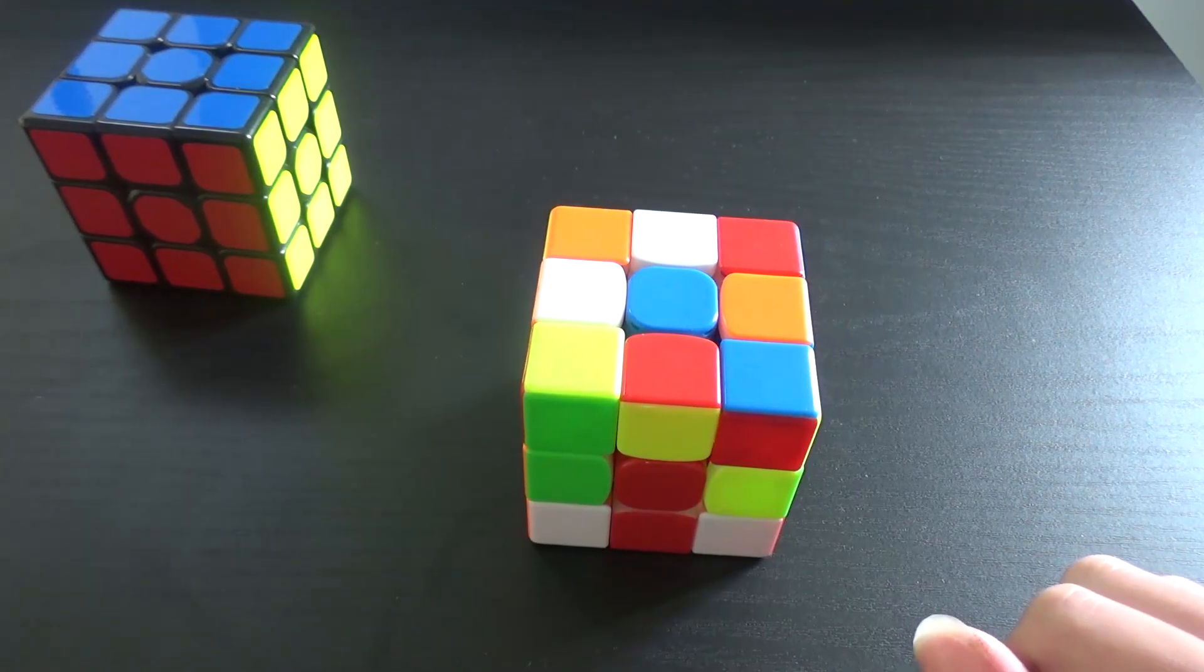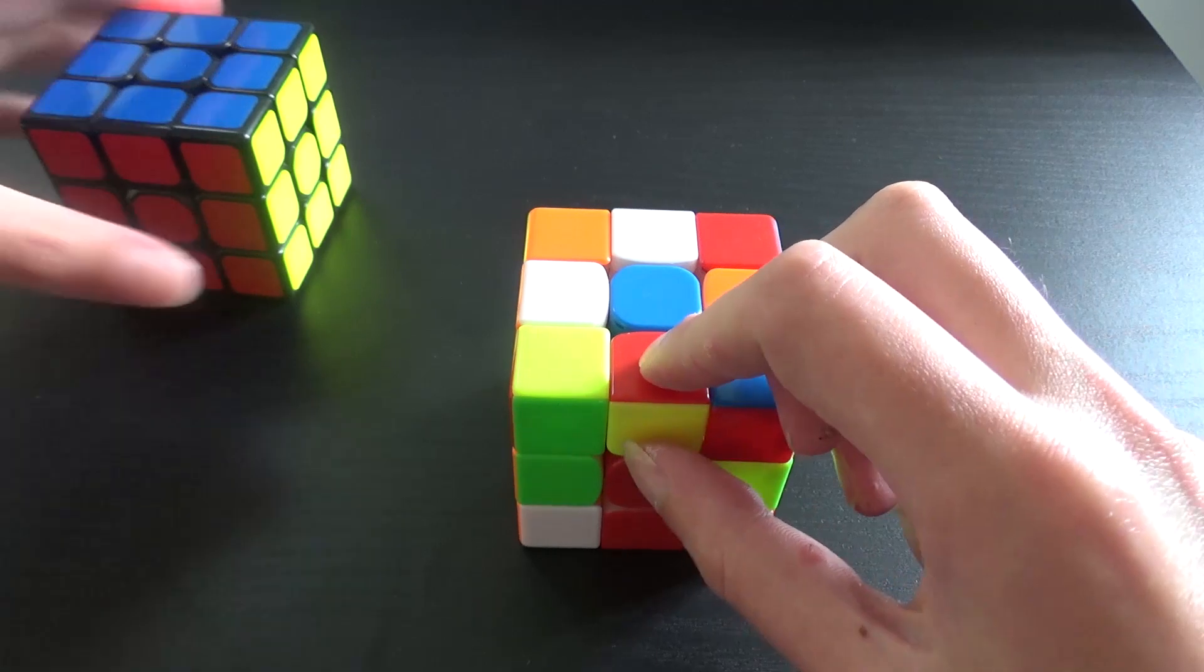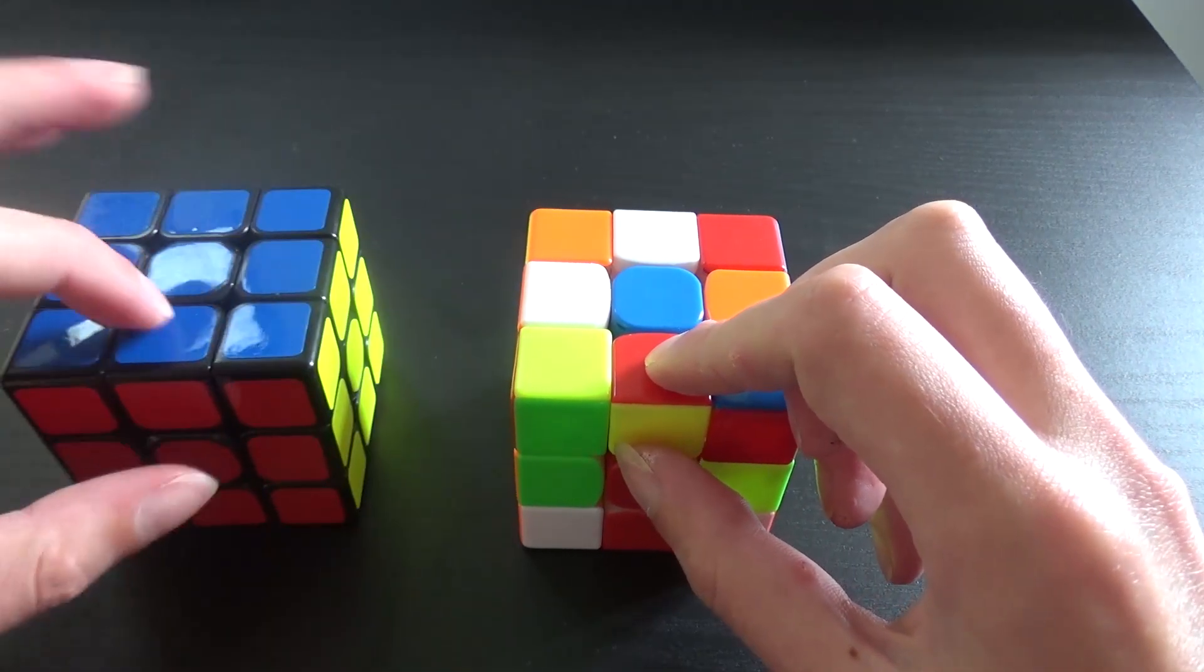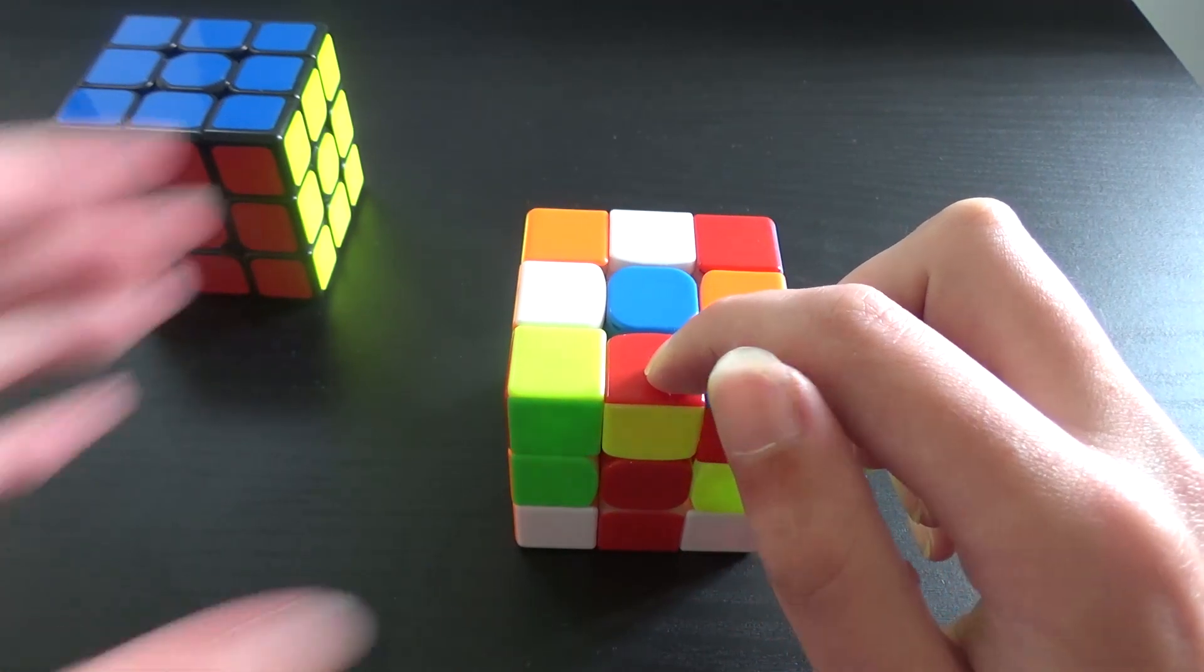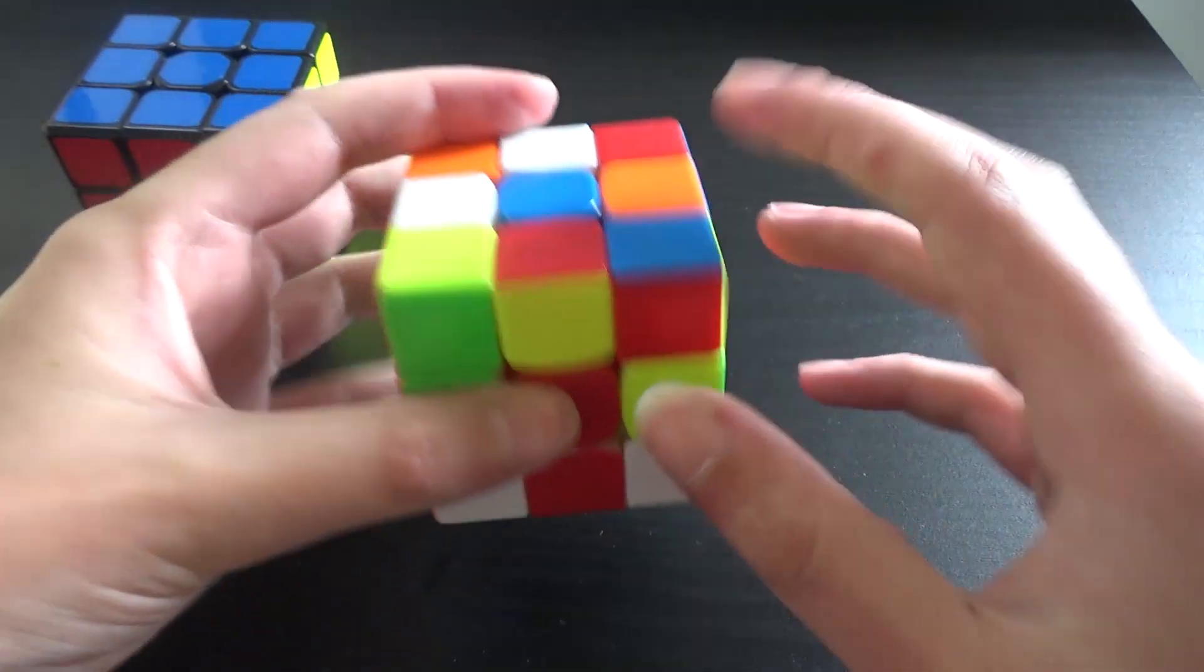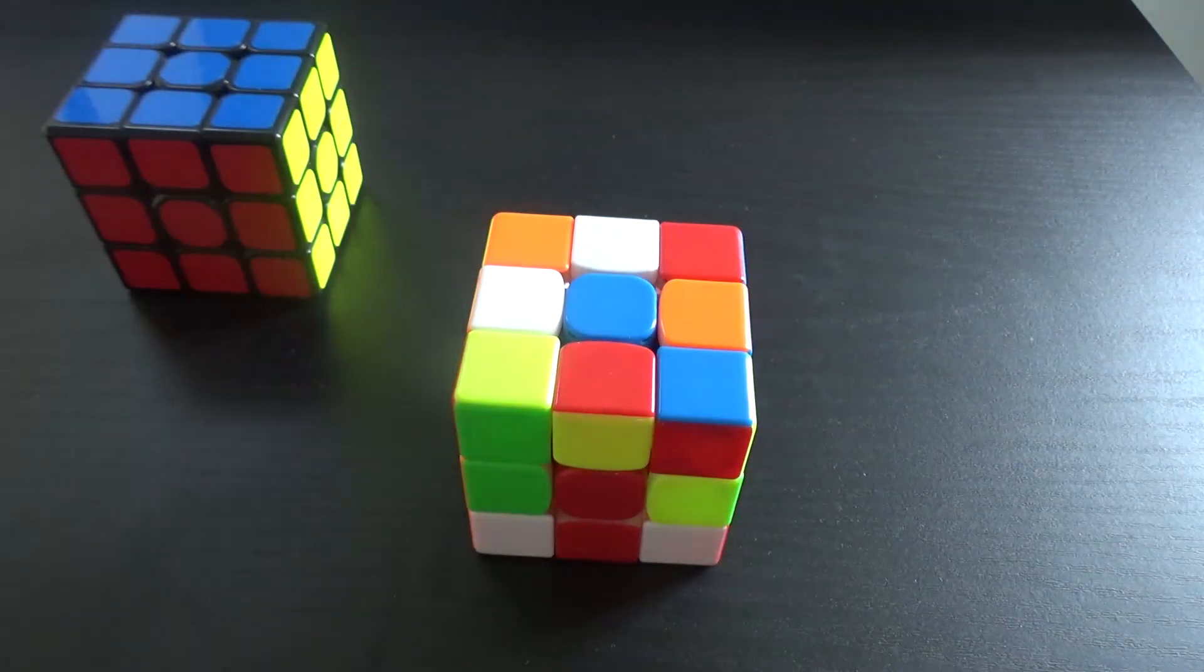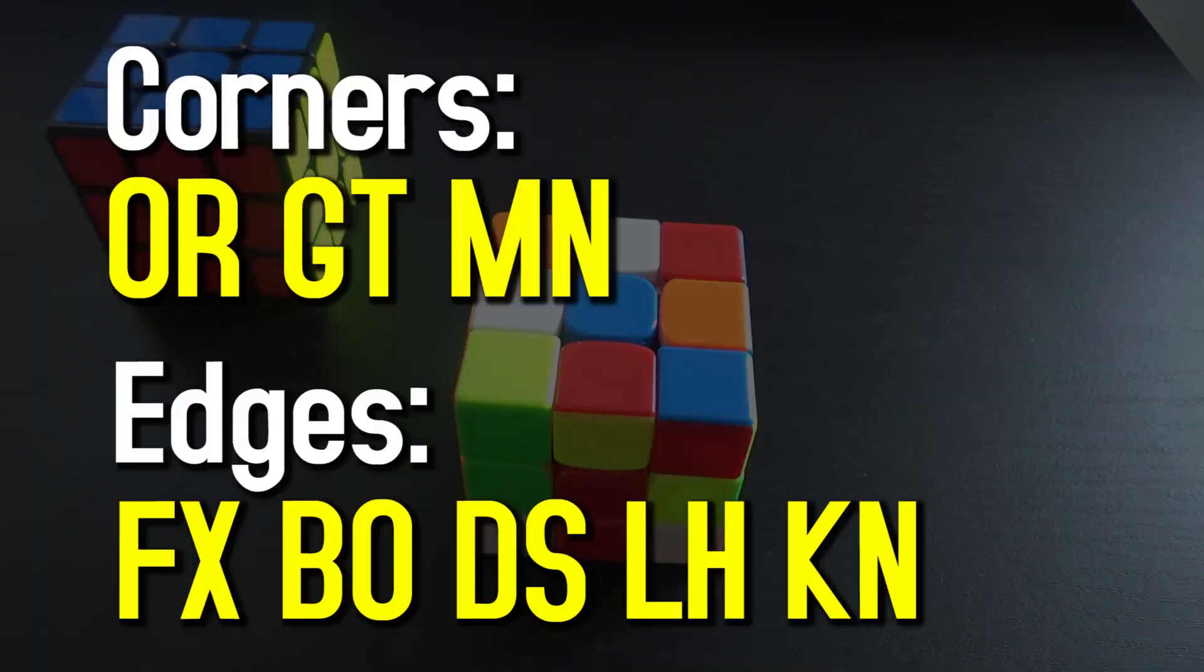So for edges it's basically the same thing. You have a starting point which for me is always the top front piece. So it's this one here and it's red yellow. So that goes here between the red and yellow centers and so on you just keep tracing the pieces out and then for the scramble I'm left with all of these letters that I have to memorize.